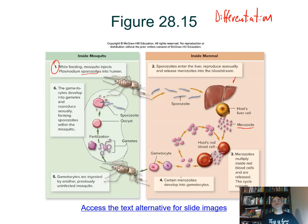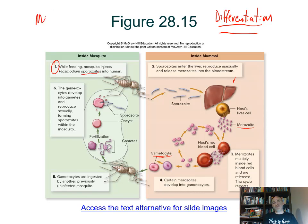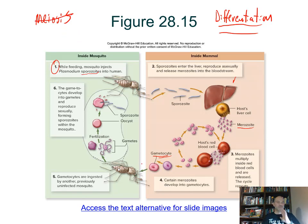At some point, some merozoites go through differentiation and turn into a gametocyte — cells that will eventually produce gametes. These cells and all the stages here are already haploid, with one set of chromosomes. They've just differentiated through mitosis. When they enter the blood of a new mosquito taking a blood meal, they'll go through division and differentiation to form gametes — and that division is just mitosis and differentiation, not meiosis, because they're already haploid.